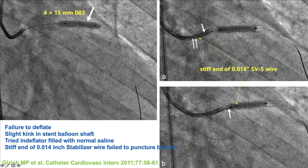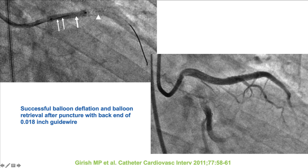Because the balloon was in the proximal portion of the coronary without significant tortuosity, they used an anchor technique and deep-seated the guide catheter. They first tried the back end of a 0.014-inch wire, which did not puncture the balloon. Then they used the back end of a 0.018 SV5 wire, which after a couple of passes led to balloon deflation, and the balloon was successfully withdrawn back into the guide catheter.